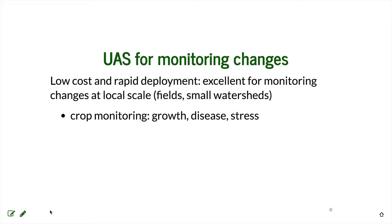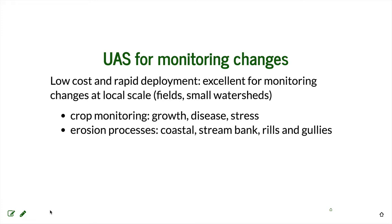Monitoring crop growth, disease, and stress really brings low-cost intervention to agriculture. Another important application is monitoring erosion processes, especially on the coast. There are many examples of using UAS to monitor coastal erosion, stream bank erosion, and due to its very high resolution, to monitor rills and gullies. In fact, one of the first research publications on UAS was about monitoring gully evolution.